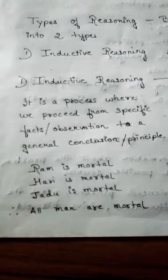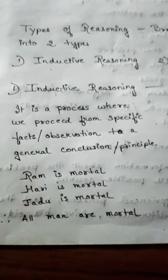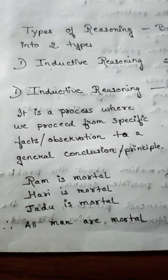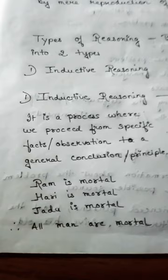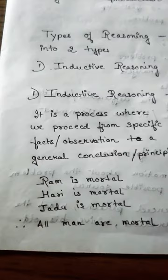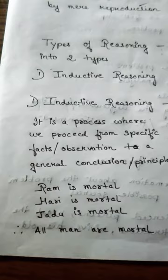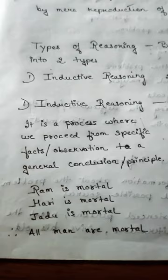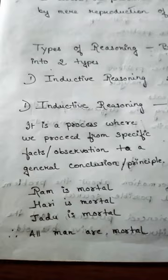Inductive reasoning is a logical process where we move, or you can say where we proceed, from specific facts or observations to a more general conclusion or principle. Here is one example. Ram is mortal. Hari is mortal. Jadu is mortal. So these are the specific statements made about Ram, Hari, and Jadu. By observing these specific facts, I made a general statement: all men are mortal. This is inductive reasoning — moving from specific facts or observations to a more general principle or conclusion.